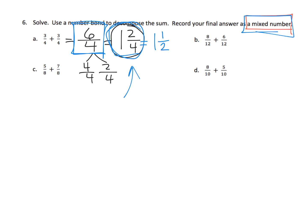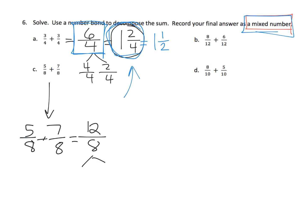Five-eighths plus seven-eighths equals twelve-eighths. Twelve-eighths is eight-eighths plus four-eighths, so that's one and four-eighths. Ideally students might also recognize that as one and a half.